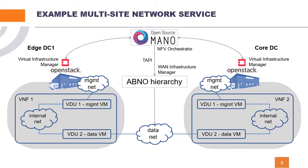The virtual network functions are connected to an external management network that is pre-configured in OSM, so it is not of primary interest. The network of interest is the data network, which enables interconnecting the two virtual network functions on the data plane. To achieve this connectivity, we rely on the WIM infrastructure manager — the hierarchy of APNO-based SDN controllers — responsible for establishing the layer-two inter-data-center connectivity through the data network, which provides the virtual layer-three networking infrastructure.